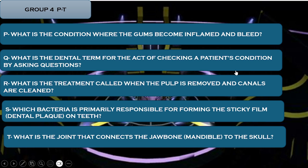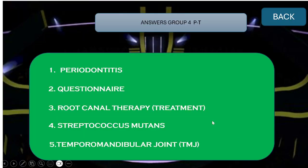I hope you have noted all of your answers. Let's check: P was for Periodontitis, Q was for Questionnaire, R was for Root Canal Therapy — abbreviated as RCT, S was for Streptococcus mutans, and T was for TMJ, the Temporomandibular Joint.